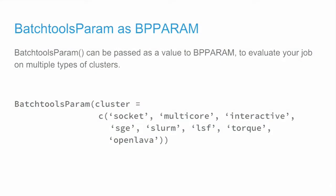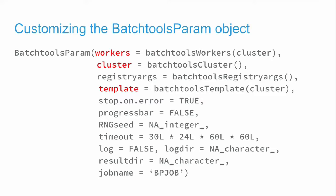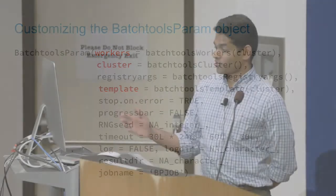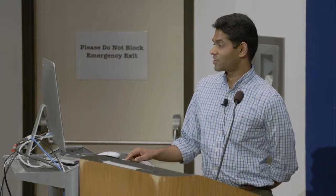All the details about template specifications are given in the documentation. We support multiple clusters — we support SGE, Slurm, LSF, Torque, OpenLava — and you can use any of these to evaluate your jobs. You can customize this parameter as much as you want, passing in multiple arguments to customize it. All of this is in the documentation.